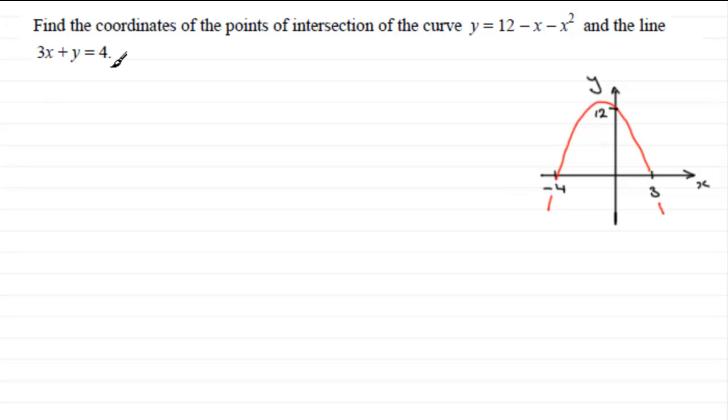Now for this line here, we've got 3x plus y equals 4, but if we were to rearrange it, if we were to subtract 3x from both sides, y would equal 4 minus 3x. So if we were sketching y equals 4 minus 3x, it would be a line that has a negative gradient of minus 3 and crosses the y axis at 4.